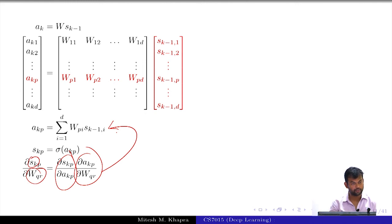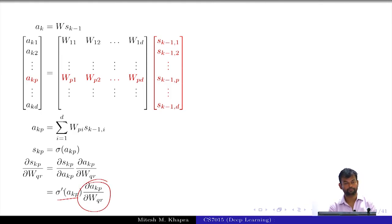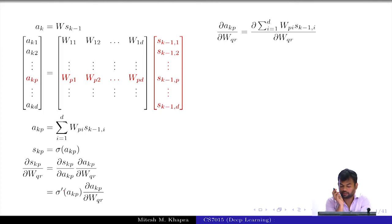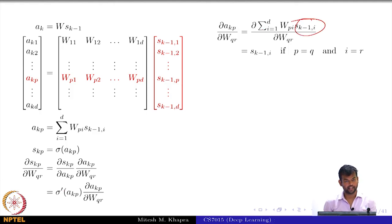So what is the first term going to be? Sigma prime of a_kp. And what is the second term going to be? This is what the second term is. Now, this is a lot of terms here. Which of these terms would actually remain? Only the terms where i = r and p = q. So only that term will remain - in that case it would just be this, and in the other cases it's going to be 0. Now you have one element of this tensor, and you have it as a very generic formula. You can just fill in all the elements of the tensor.